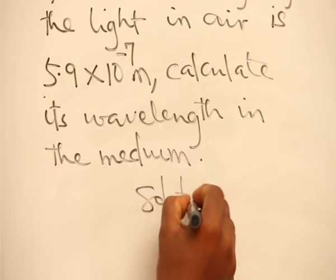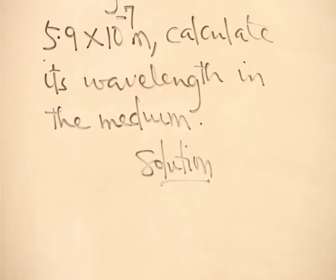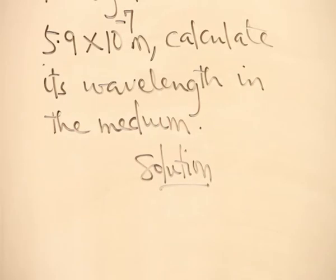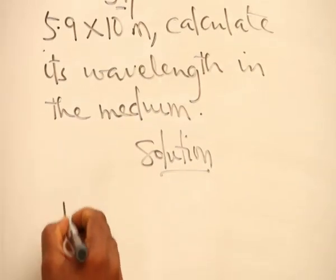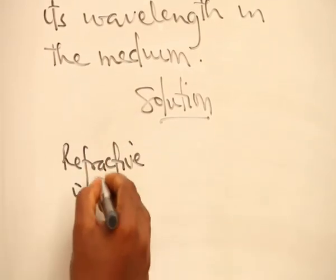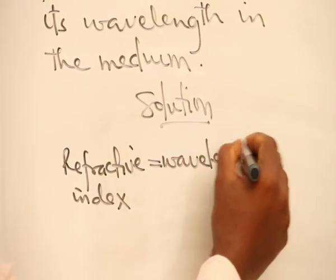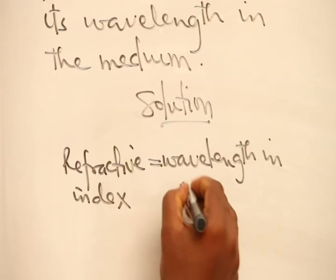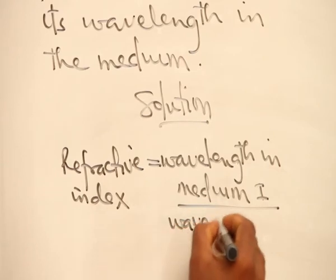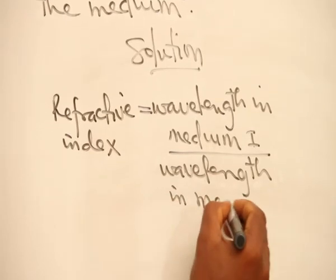We take the solution. We use the formula for refractive index that connects refractive index with wavelength. Refractive index is equal to wavelength of the light in medium 1 divided by the wavelength of the light wave in medium 2.